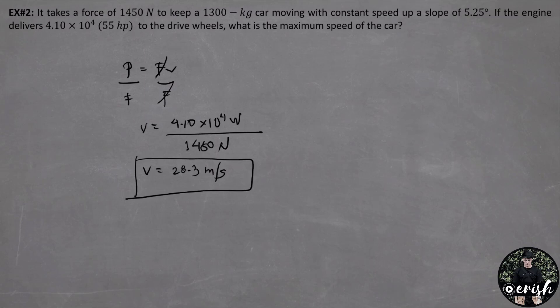So this velocity is approximately 63 miles per hour. And the power delivered by the engine overcomes the friction and the air resistance. And also, it provides the force needed to lift the car up the hill. So this is example number 2.